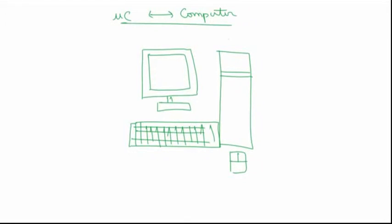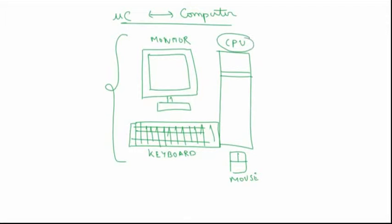Let me label these: this is your CPU, this is your monitor, this is your keyboard, and this is your mouse. Now, what is the most important part of this whole setup — what is the most important part of a computer? The most important part of a computer is the CPU, which is also called the brain of the computer. Why is it called the brain? Because it houses the most important part: its processor.